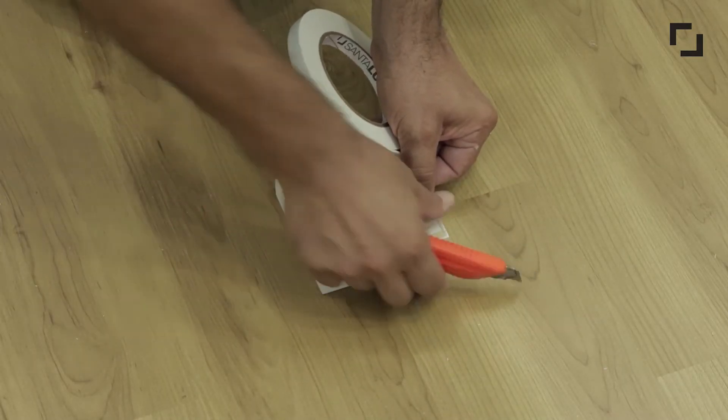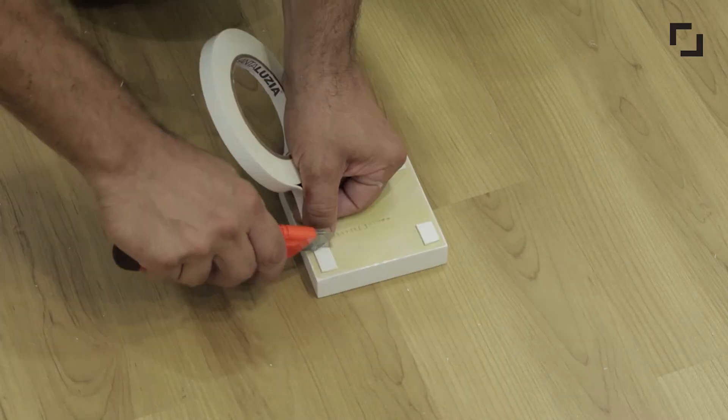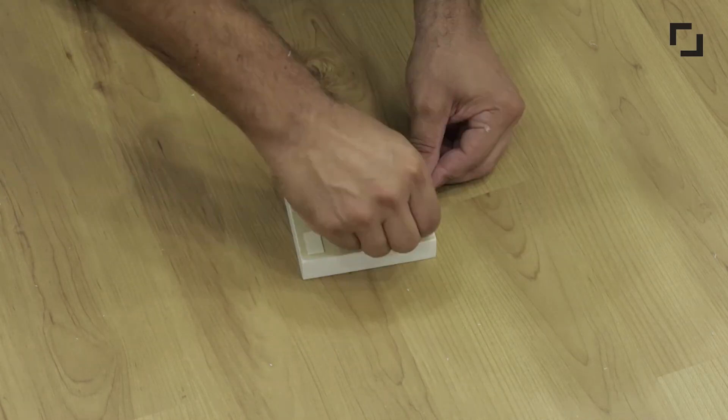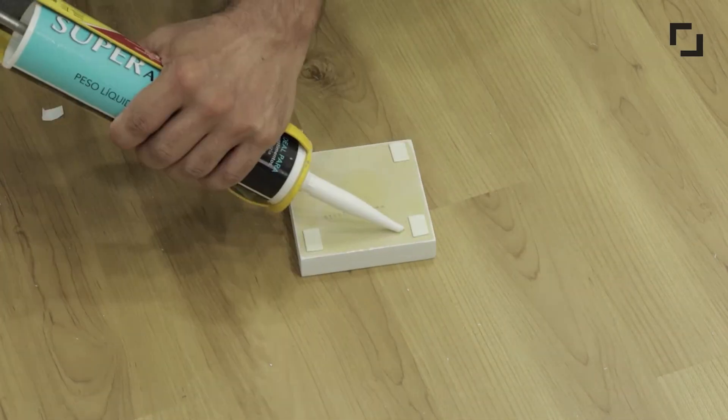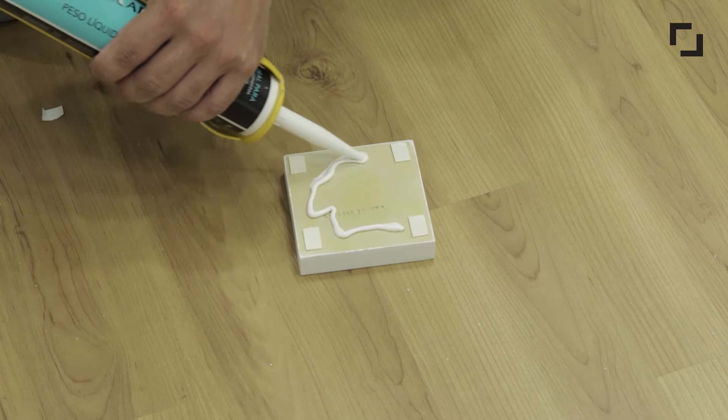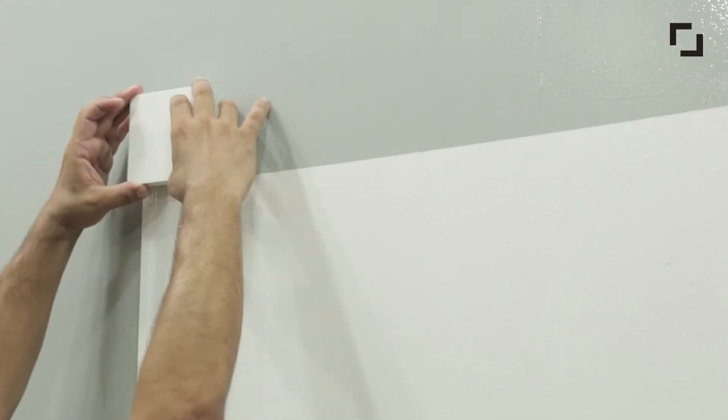You should now install the first rosette. Apply the double-sided tape to its back side, remove the tape protection, apply the super adhesive, and glue the rosette on the wall.